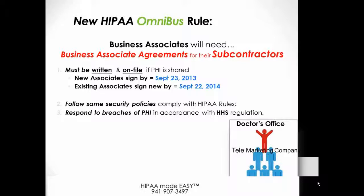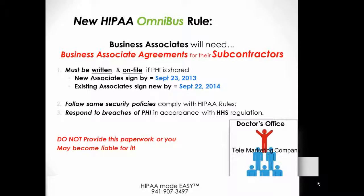Business associates are going to be held accountable for the same security policies and comply with all HIPAA rules and regulations. They're even going to have to respond to breaches in PHI. If there's a compromise where some of the patient information has leaked, they're going to have to report that to the Department of Health and Human Services. Don't think you can share your business associate agreement with your business associates — theirs will be written a little differently, and we have them available. Just direct them to HIPAA Made Easy.